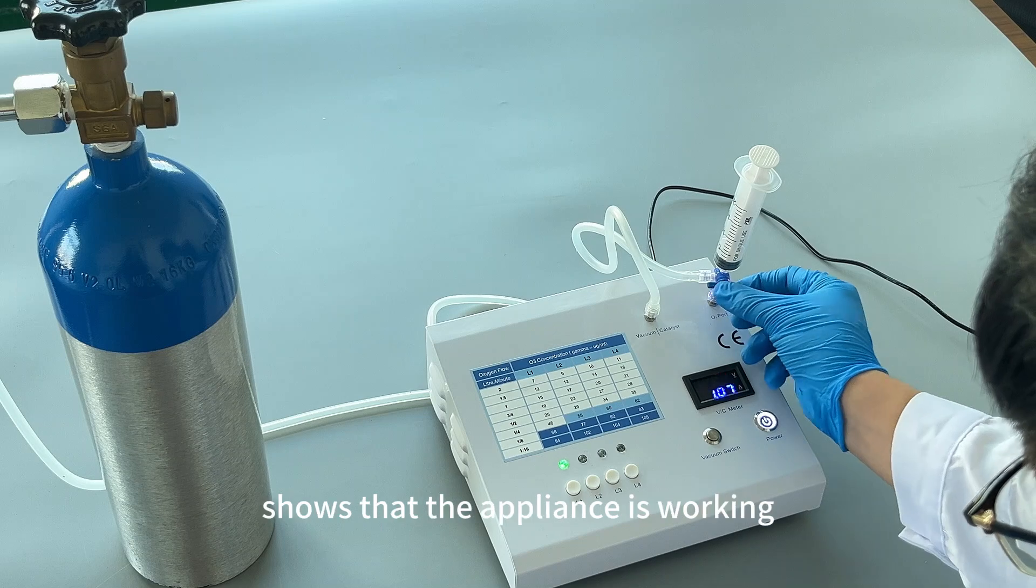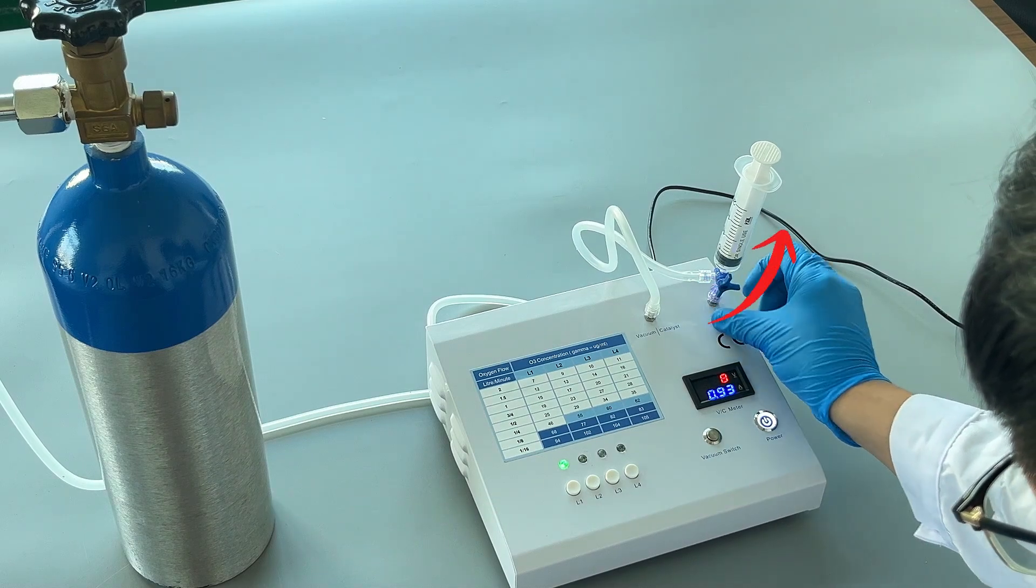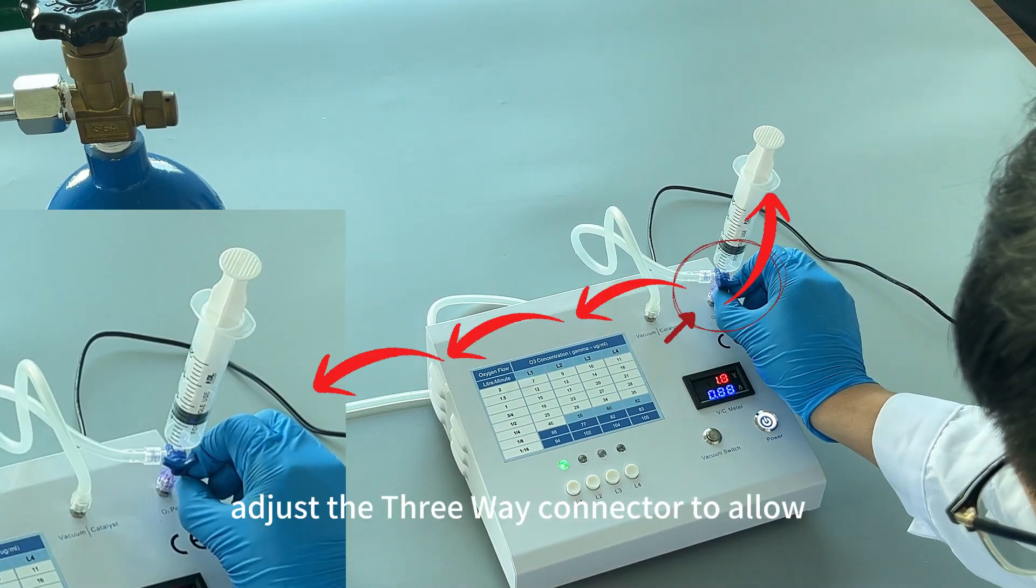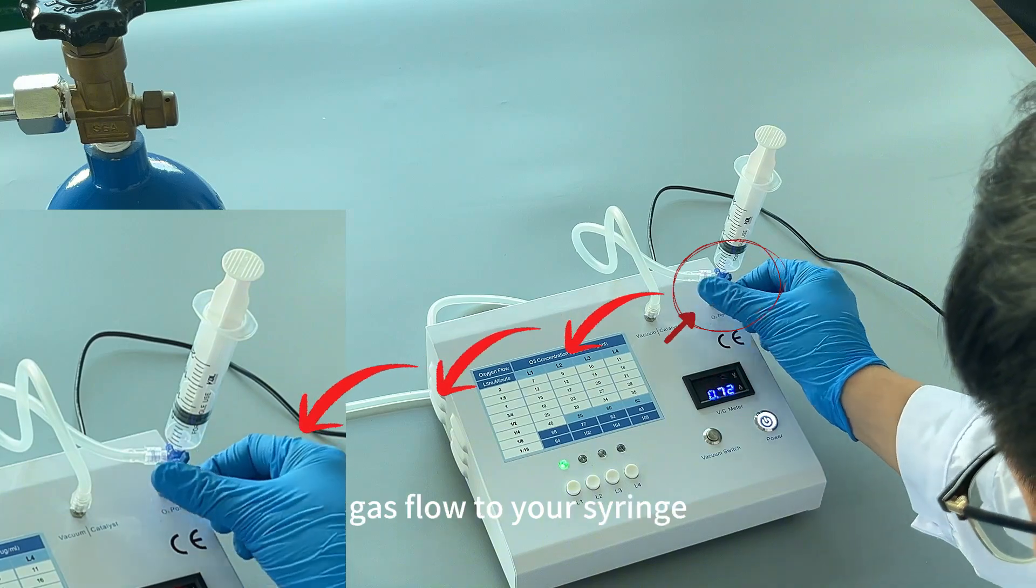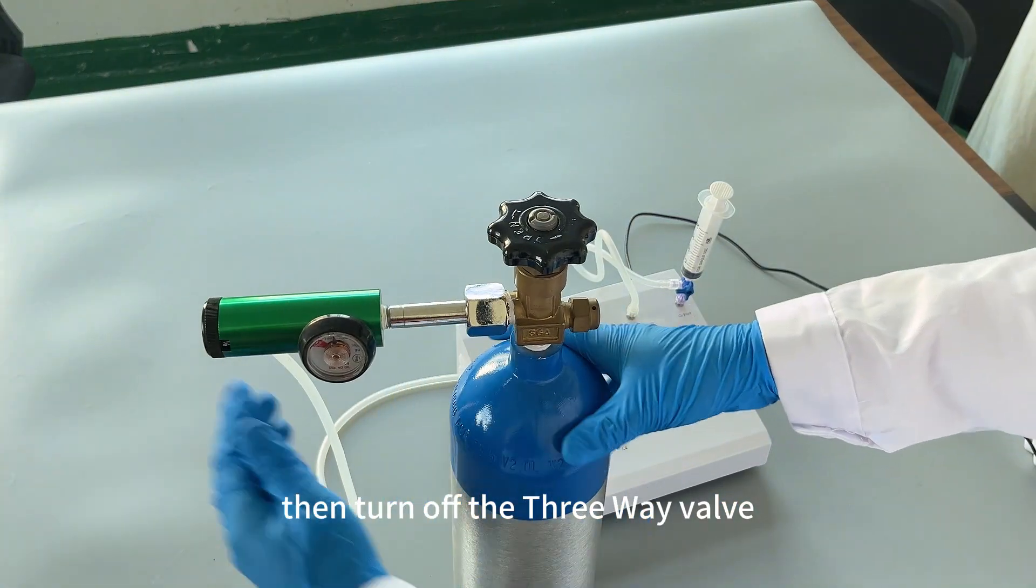The green indicator light shows that the appliance is working. Once finished, adjust the three-way connector to allow gas flow to your syringe. Then, turn off the three-way valve.